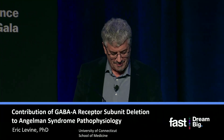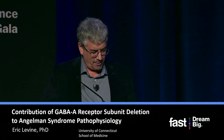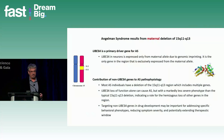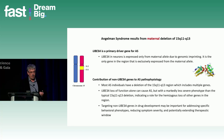Thank you for the opportunity to tell you about our work. We know that UBE3A — the loss of UBE3A in neurons — is a primary driver for Angelman syndrome, and we've heard a lot about UBE3A and its importance today. But we also know that the non-UBE3A genes in the region, where we lose one copy of those genes, also contribute to Angelman syndrome pathophysiology and behavioral phenotypes.